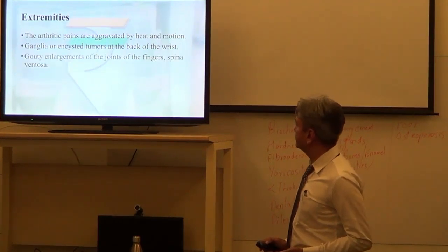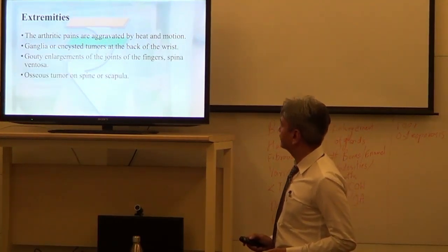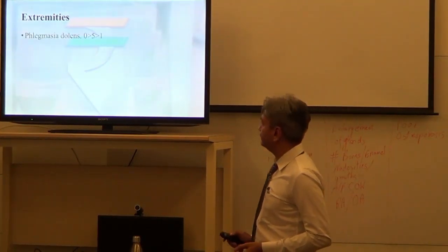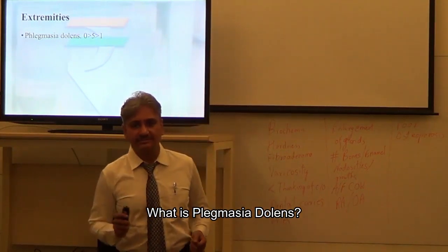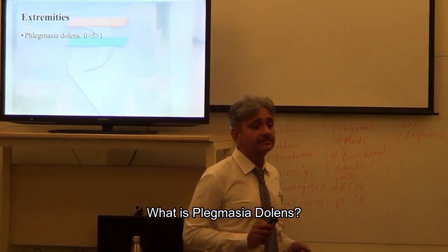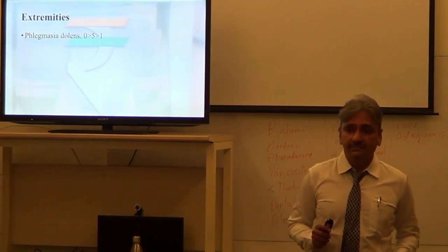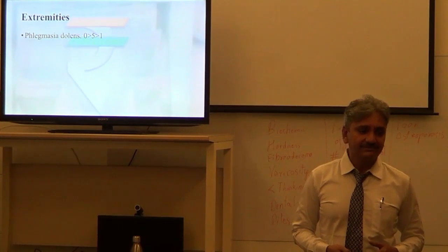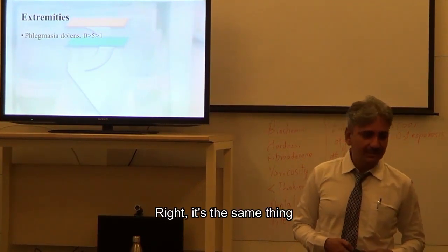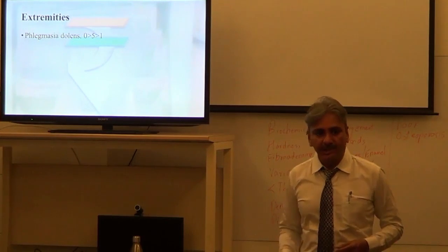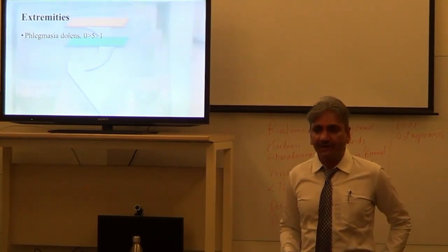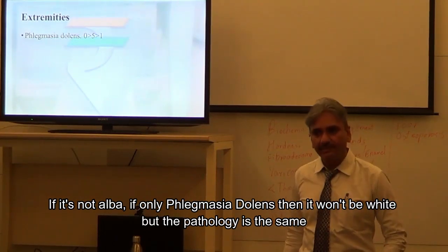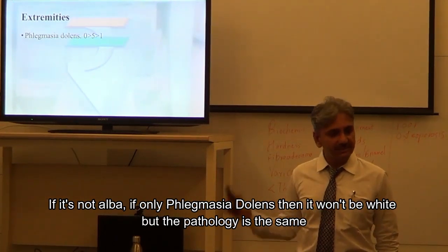Phlegmasia dolens - the leg looks white. Phlegmasia dolens, the pathology is the same, it is simply varicose veins.